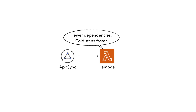Even when you do need to use a Lambda function with AppSync, your function can be a lot lighter because it doesn't need quite as many dependencies, since it's just going to do one thing, and can therefore cold start a lot faster. So even when cold starts happen, they are much less impactful to the user experience.